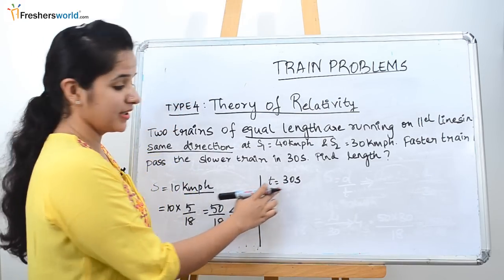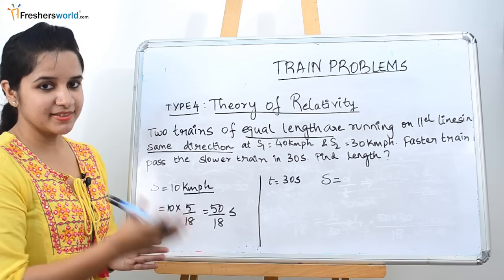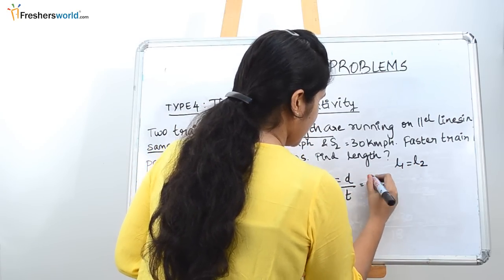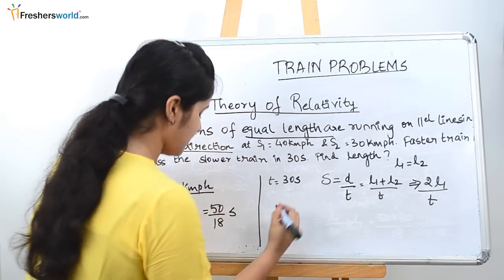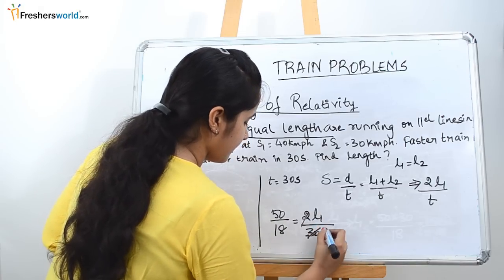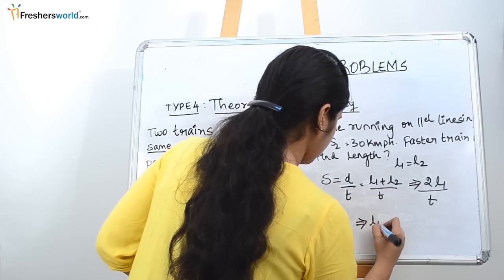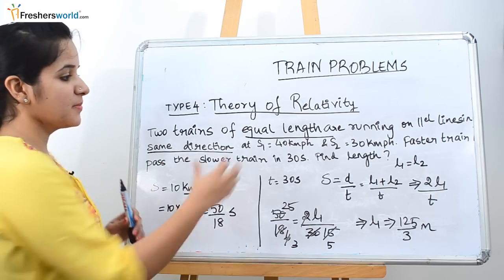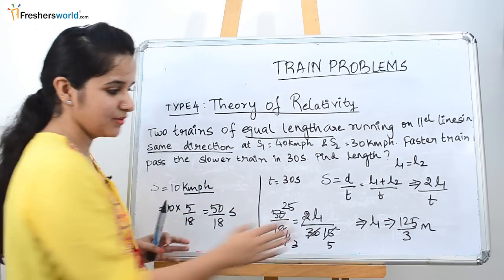The important catch is the equal length of the trains. For two trains crossing in the same direction, distance = L1 plus L2. Since L1 equals L2, distance = 2L1. Using speed = distance / time: 50/18 = 2L1 / 30. Solving gives the length of each train. Sometimes the question may ask for the length of the faster or slower train specifically, but since both are equal length, the answer is the same either way.